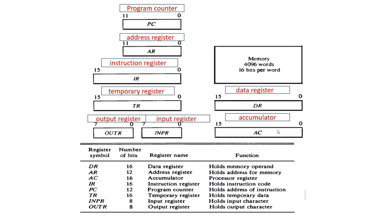IR register is the instruction register. It is also going to have 16 bits and the instruction register is going to hold the instruction code — what's the next instruction to perform after completing the first instruction. PC register is nothing but program counter. It is also going to have 12 bits, and the main purpose of the program counter register is to hold the address of instruction. IR register holds the instruction, while PC register holds the address of that instruction.